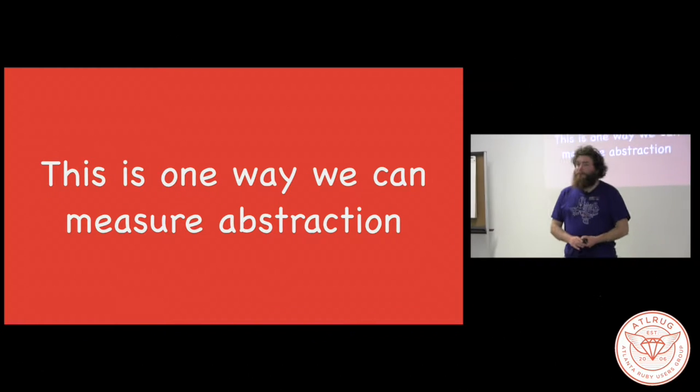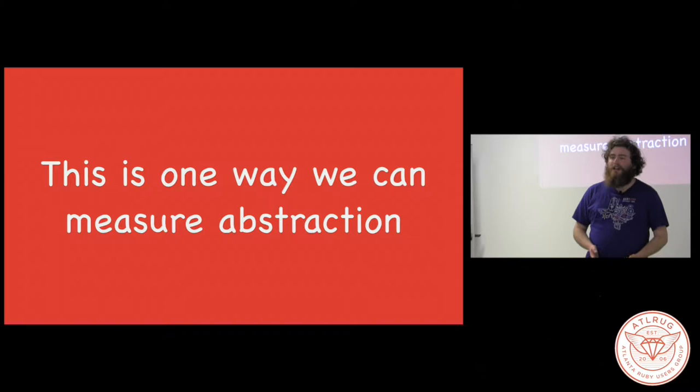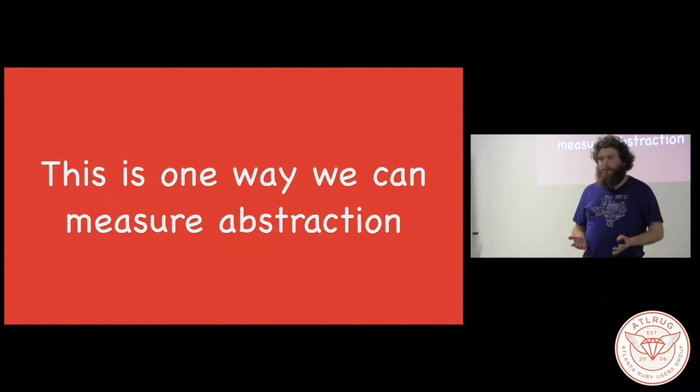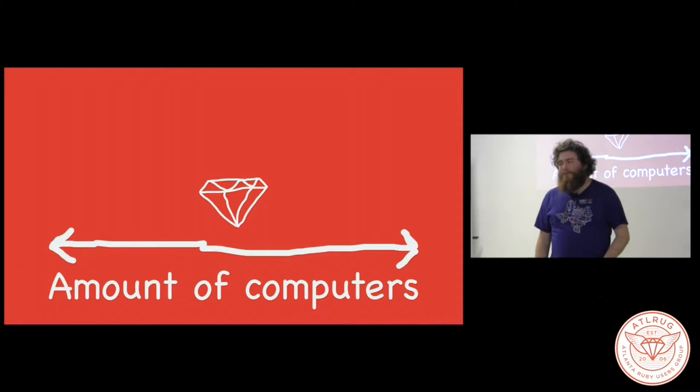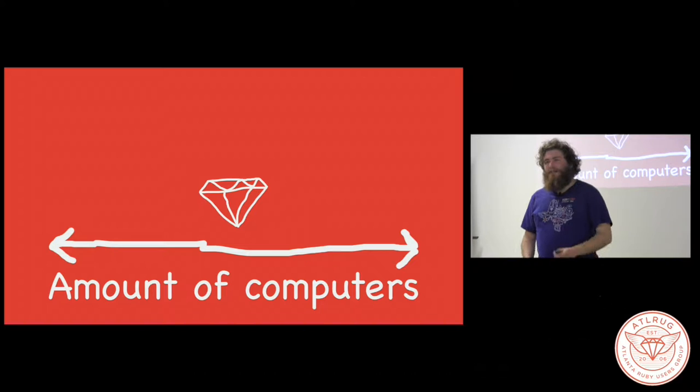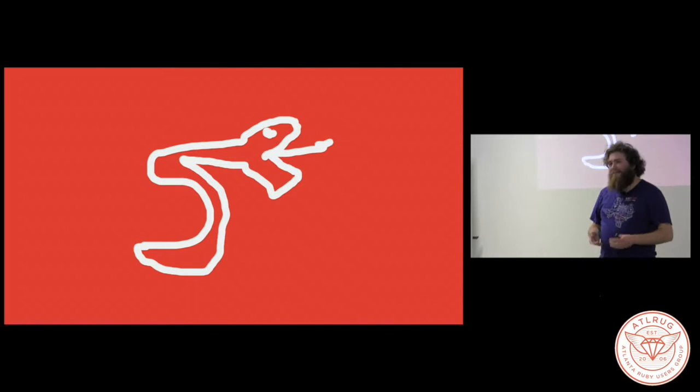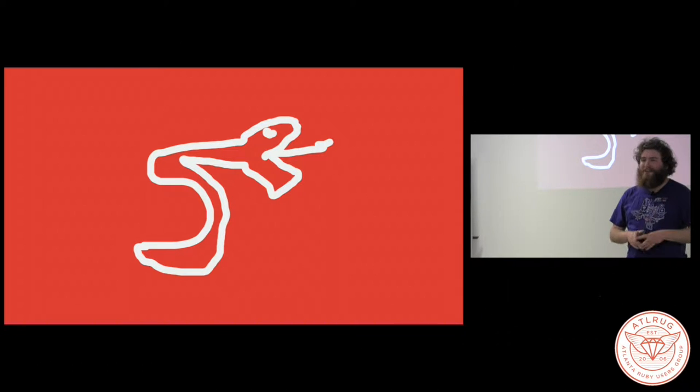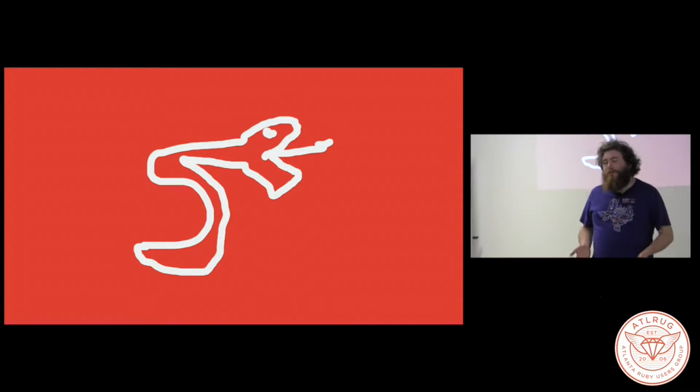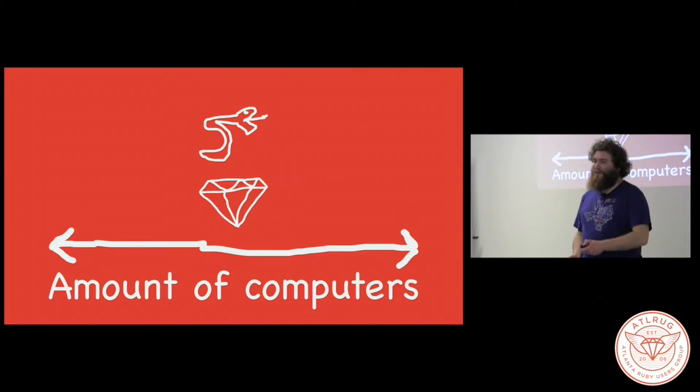This is one way to measure abstraction of a programming language or a system. When you're writing Ruby, you're spending less time thinking about the computers than you would with some other programming languages. We can actually put these programming languages on a line of the amount they make us think about how the computer works. Now unfortunately, a line isn't very good with a single point on it, so let's add another one. Let's think about Python. Python, just like Ruby, is a dynamically typed programming language that has object systems and functions. People tend to build big libraries of code that you can reuse, and when you're writing Python programs, at least in my experience, you end up thinking mostly in terms of domain, just like you do in Ruby. And so I'm going to put Python at the same position as Ruby on this line.